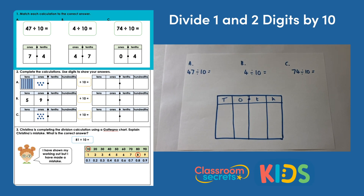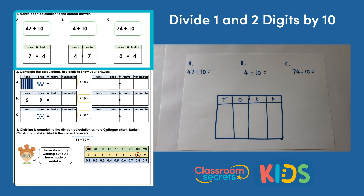Question one: match each calculation to the correct answer. We have three calculations where we're dividing by 10, and then three options below with numbers written on a place value grid. I've got a place value grid ready here. You could use counters on it or write in it like I'm going to do today.